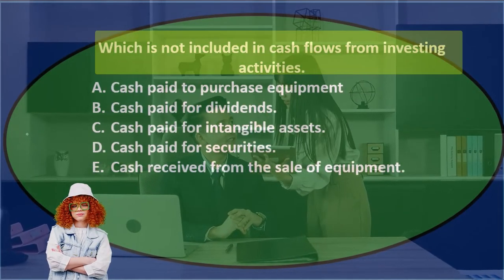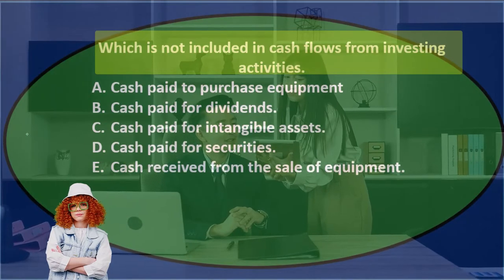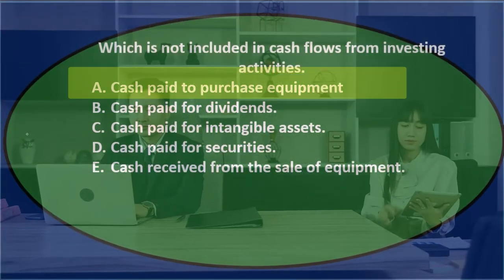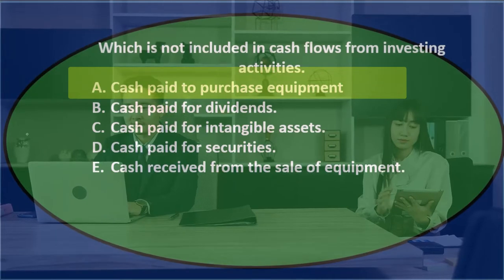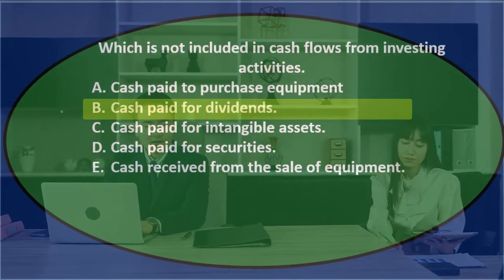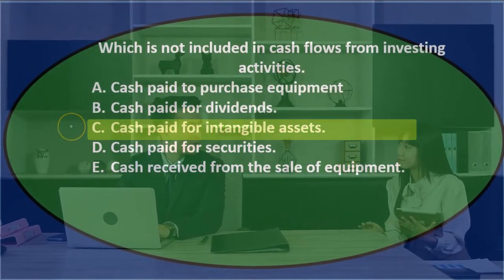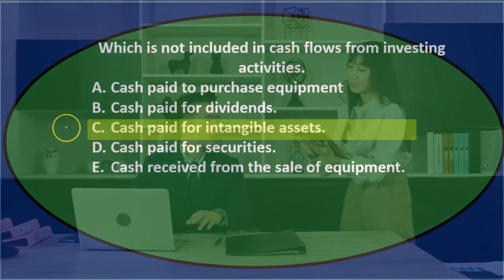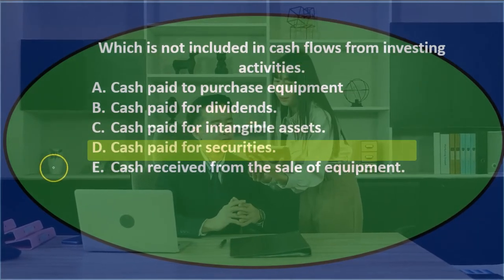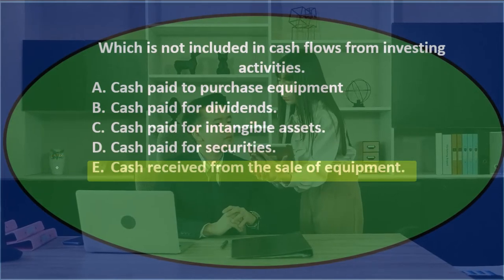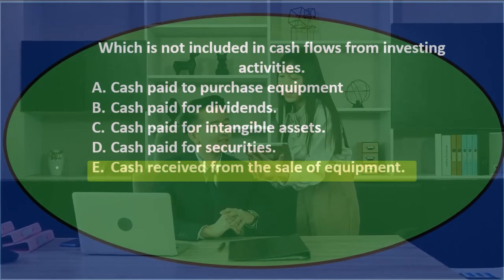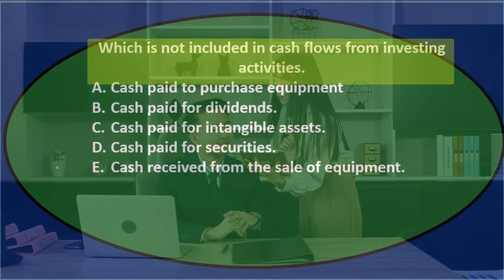Next question: which is NOT included in cash flows from investing activities? A: cash paid to purchase equipment. B: cash paid for dividends. C: cash paid for intangible assets. D: cash paid for securities. E: cash received from the sale of equipment. Let's go through this using the process of elimination.